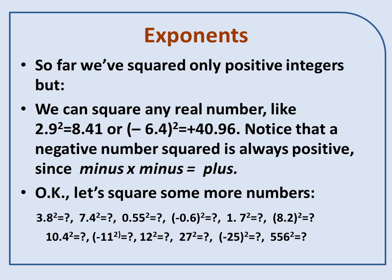So far, we've squared only positive integers. We can square any real number, like the decimal number 2.9 squared is 8.41, or the negative number minus 6.4 squared is plus 40.96.